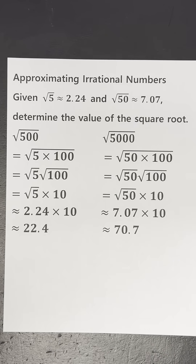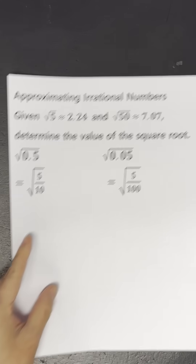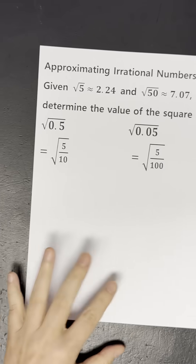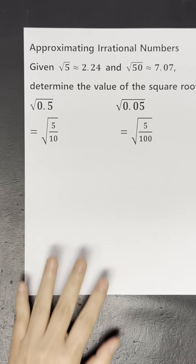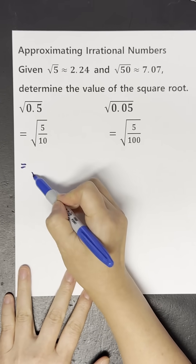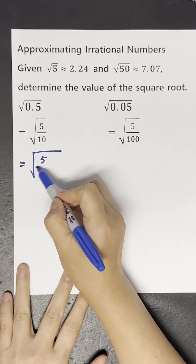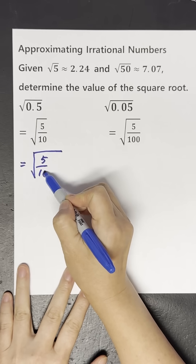However, it is quite difficult when there's a decimal number inside the square root. The way to solve such questions is to make the number inside the square root a perfect square number. Let's solve those now.